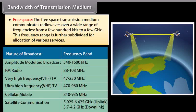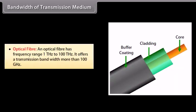Optical fiber: an optical fiber has a frequency range of 1 THz to 100 THz. It offers a transmission bandwidth of more than 100 GHz.